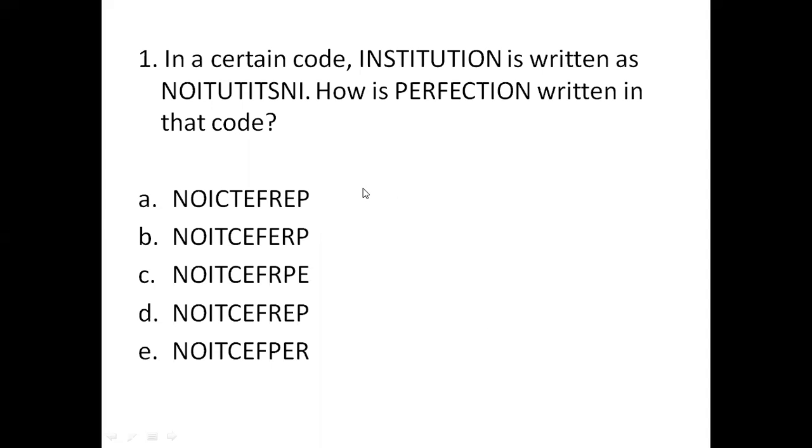First question, in a certain code, institution is written as NOITUTITSNN. How is perfection written in that code?